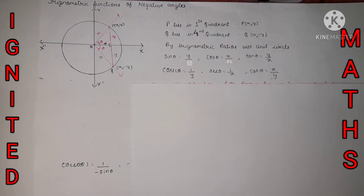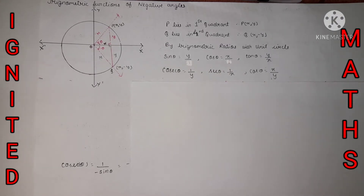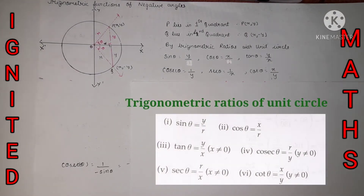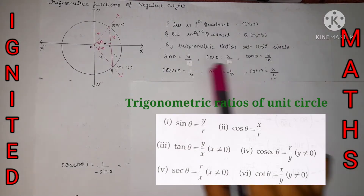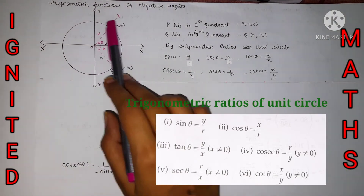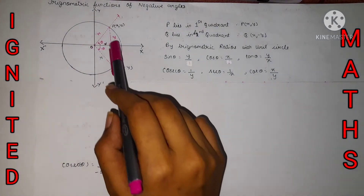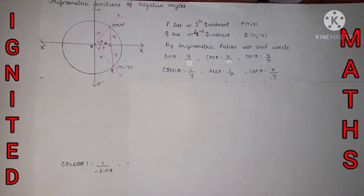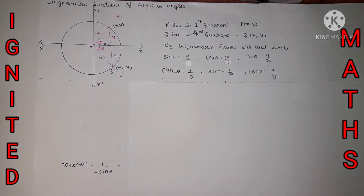Now let's come to the trigonometric ratios with the unit circle. We have sine theta equal to opposite upon hypotenuse. First I'm going to do this for positive theta — that is, the anti-clockwise direction — and then with the help of that we will do it for minus theta, the clockwise direction.